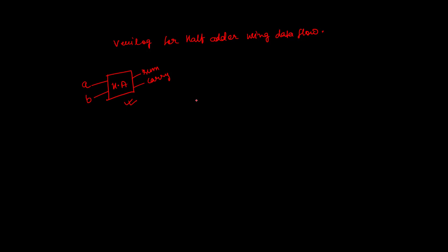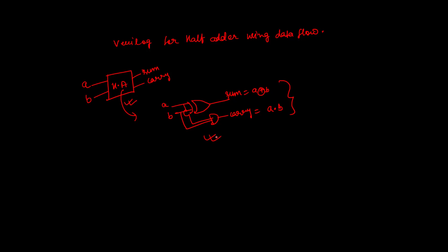Inside the half adder circuit, sum is computed as A XOR B, and carry is computed as A AND B. So the circuit uses an XOR gate for the sum output and an AND gate for the carry output.